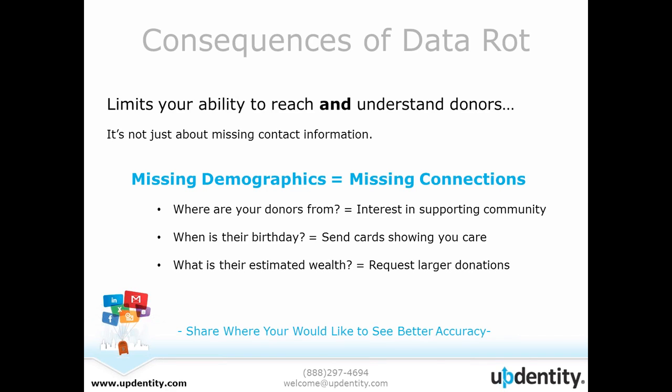Some additional issues with data rot lie in the fact that it limits your ability to reach out and understand donors. It's not just about contact information — you need to know things such as where they're from, when their birthday is, what's their estimated wealth. If demographics are missing, you are missing so many opportunities to connect. Knowing where your donors are from can help you determine interest in supporting a community project. Knowing the birthday or age can help you show that you care. You may find all kinds of opportunities to ask for donations or even larger donations if you simply know that the individual may be able to spare a little bit more.